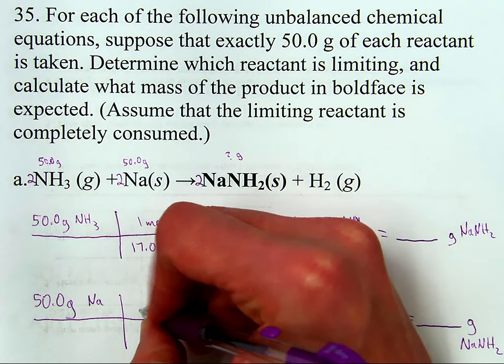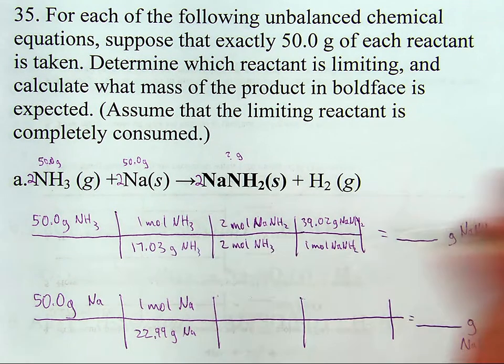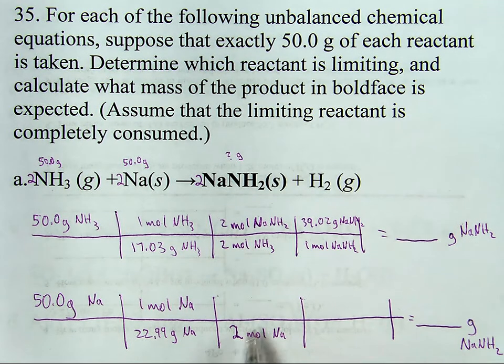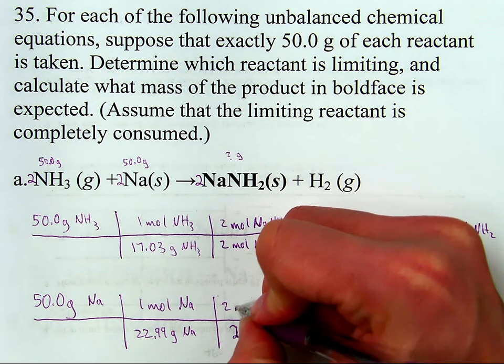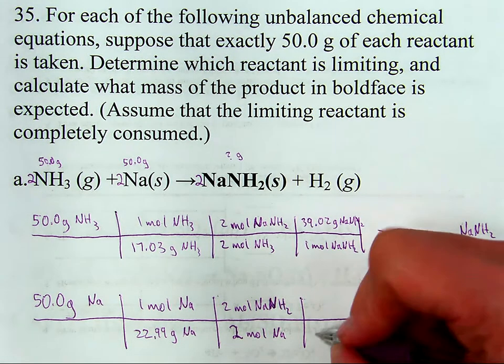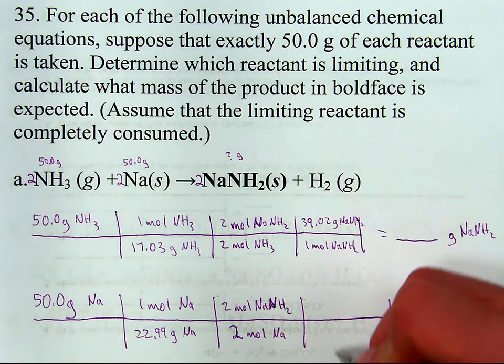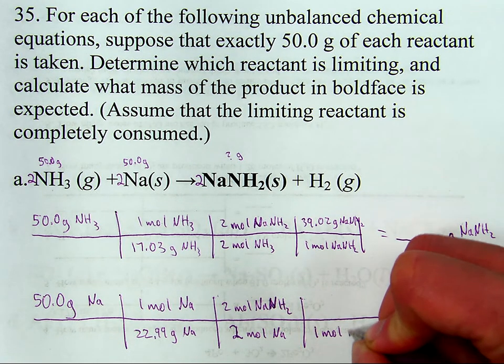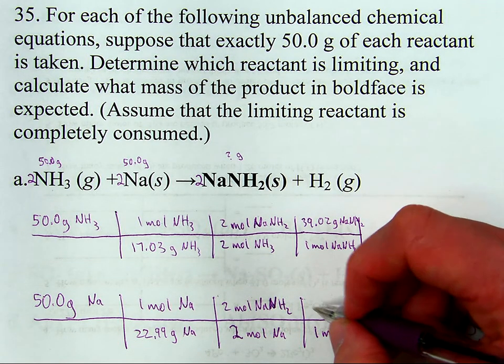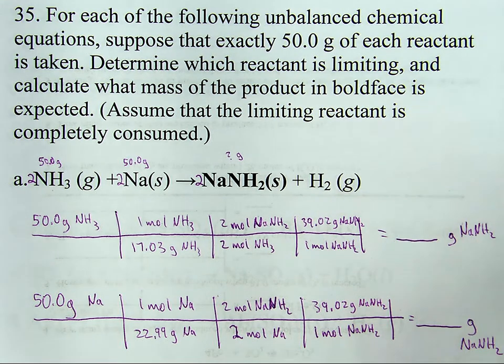Sodium. One mole of sodium is 22.99 grams of sodium metal. And then for every two moles of sodium, which is what I have, I'm trying to find this. There are two moles of product. Now I've got moles of product. I'll go from grams of sodium to moles of sodium, from moles of sodium to moles of product. From moles of product I'll go to grams of product using the molar mass. Which means one mole of this product NaNH₂ has a molar mass of 39.02 grams. That's the setup.